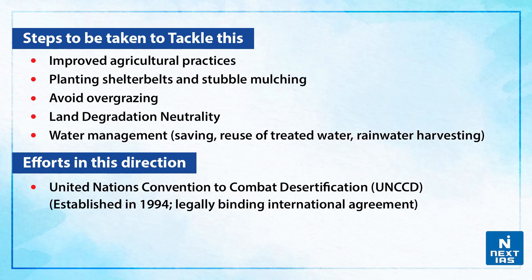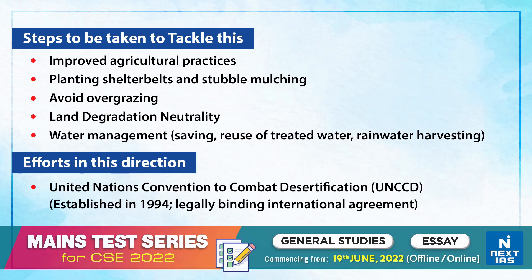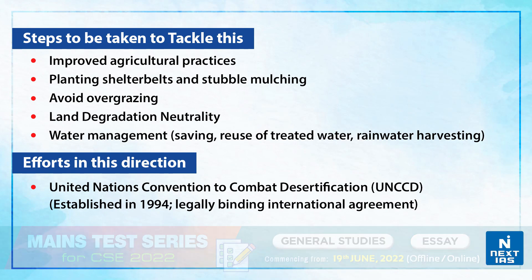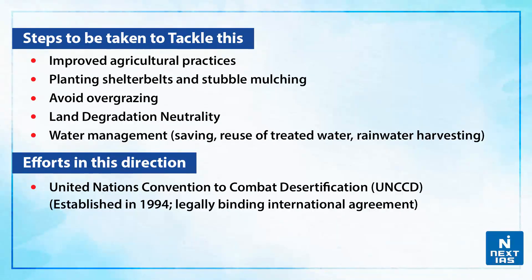Some of the positive steps that need to be taken to tackle this situation include improved agricultural practices, planting shelter belts, and stubble mulching. We should also avoid overgrazing.